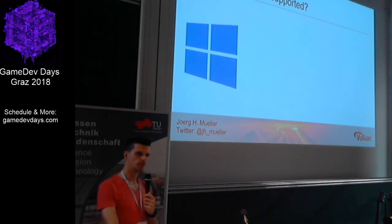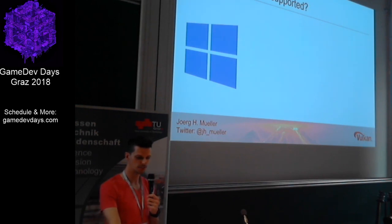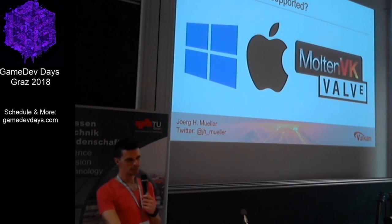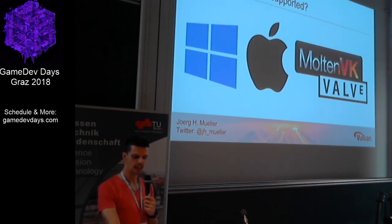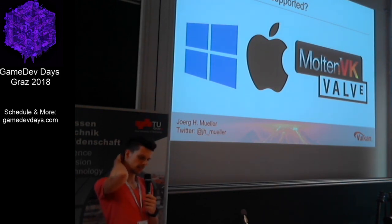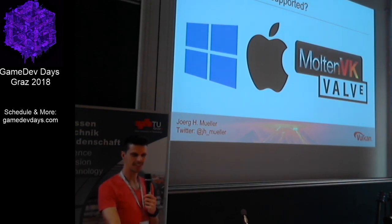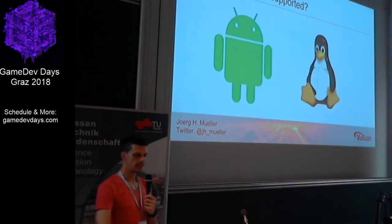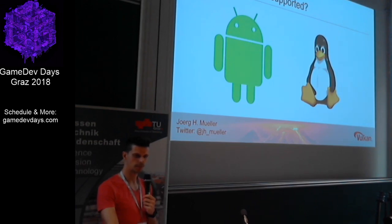Operating system-wise, Vulkan is supported on Windows starting with Windows 7, which is interesting because DirectX 12 — another modern graphics API competitor — only supports Windows 10. Apple is a bit of a pain since they have their own competitor called Metal and have even deprecated OpenGL for iOS and macOS. However, MoltenVK, financed partly by Valve, implements the Vulkan API on top of Metal and works very well — Dota 2 actually renders faster with MoltenVK than with OpenGL on Mac. Google immediately supported Vulkan on Android, and Linux also has Vulkan support depending on your hardware and driver version.